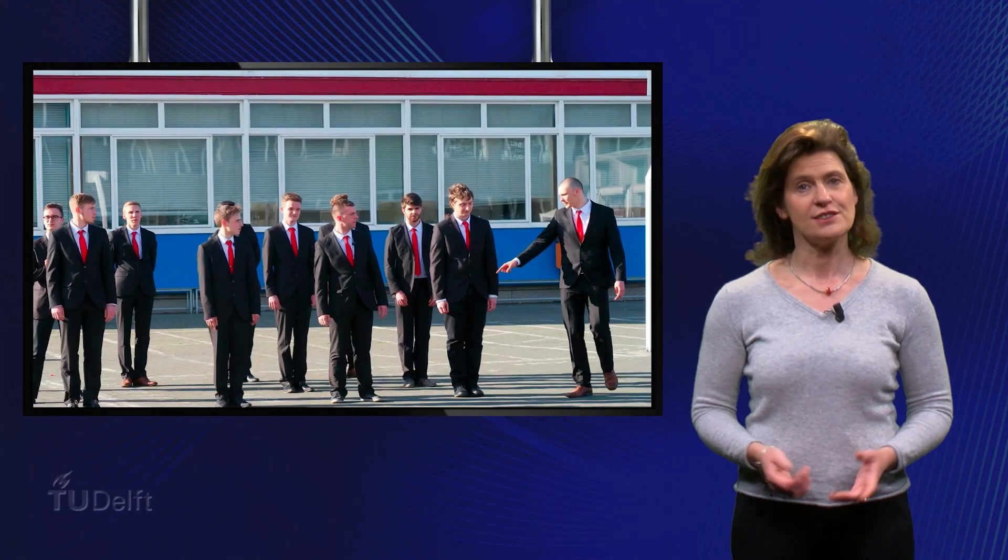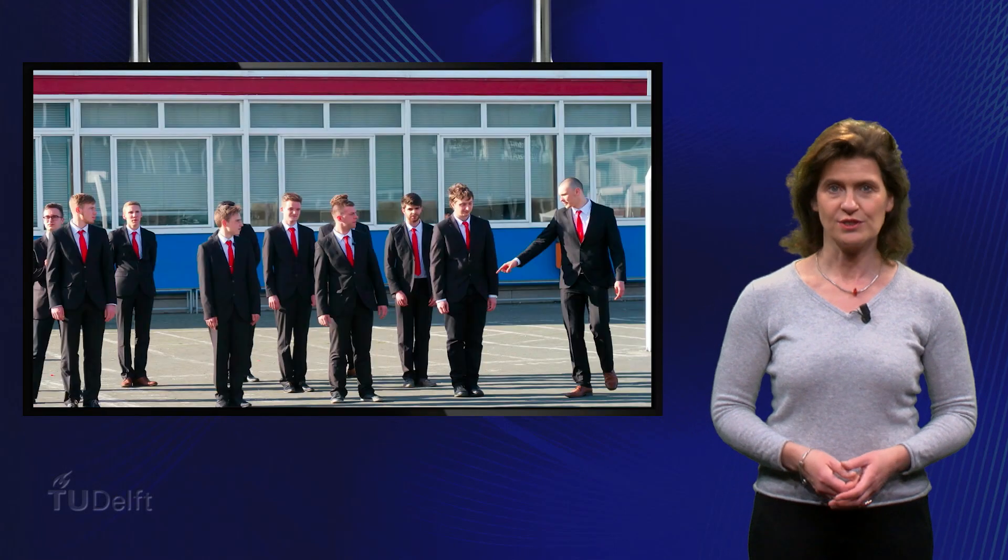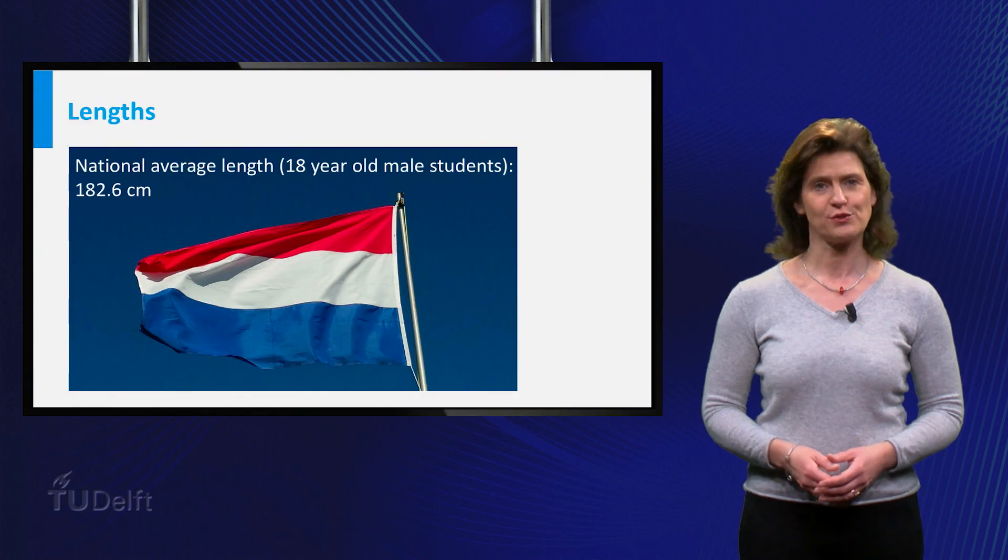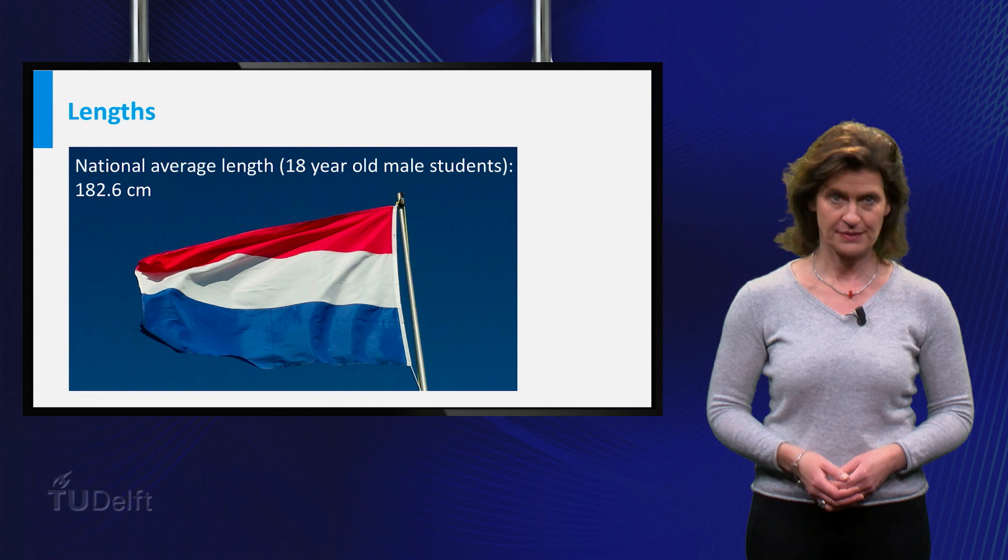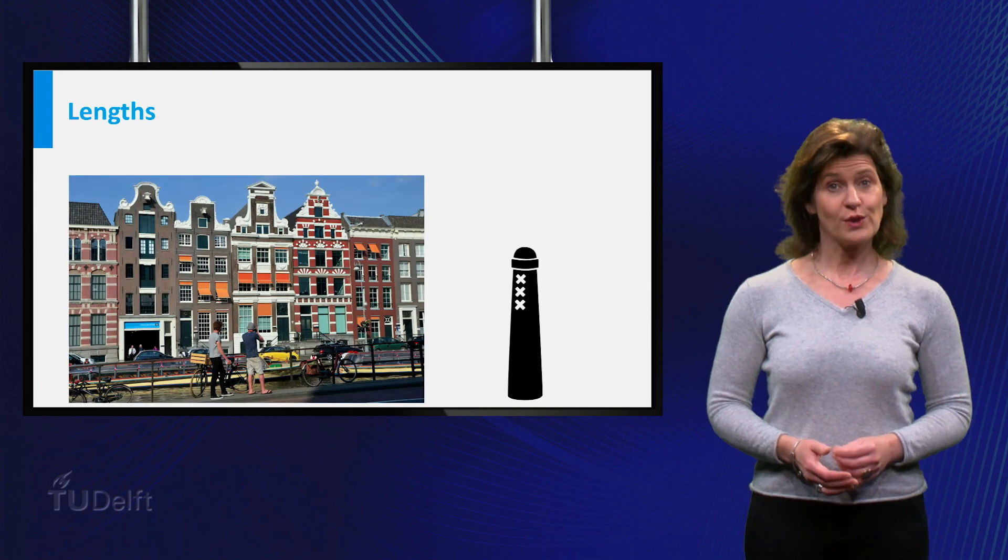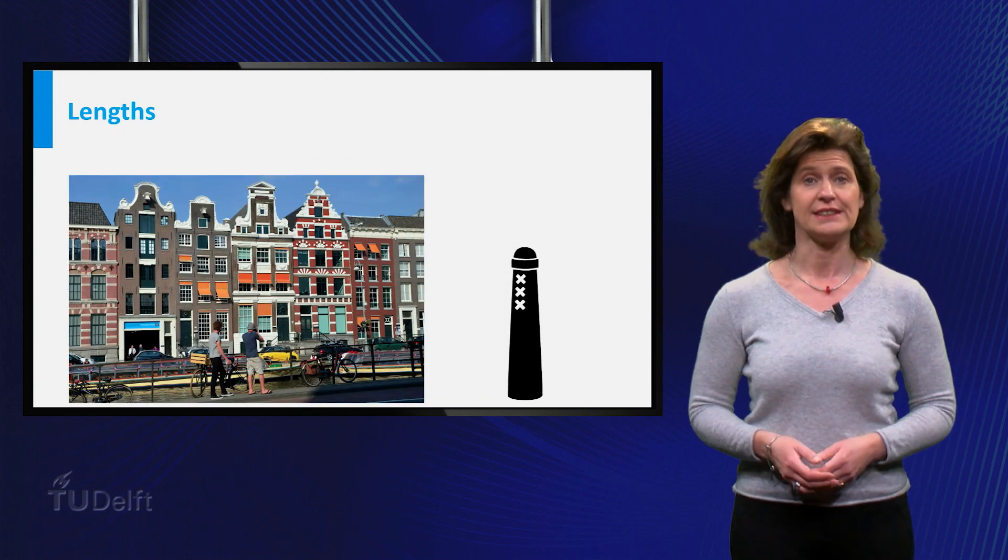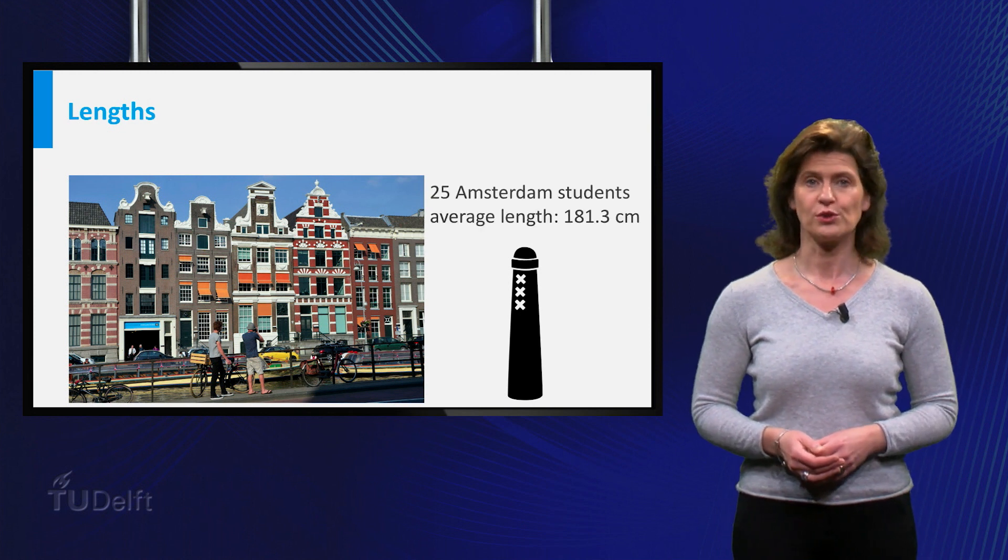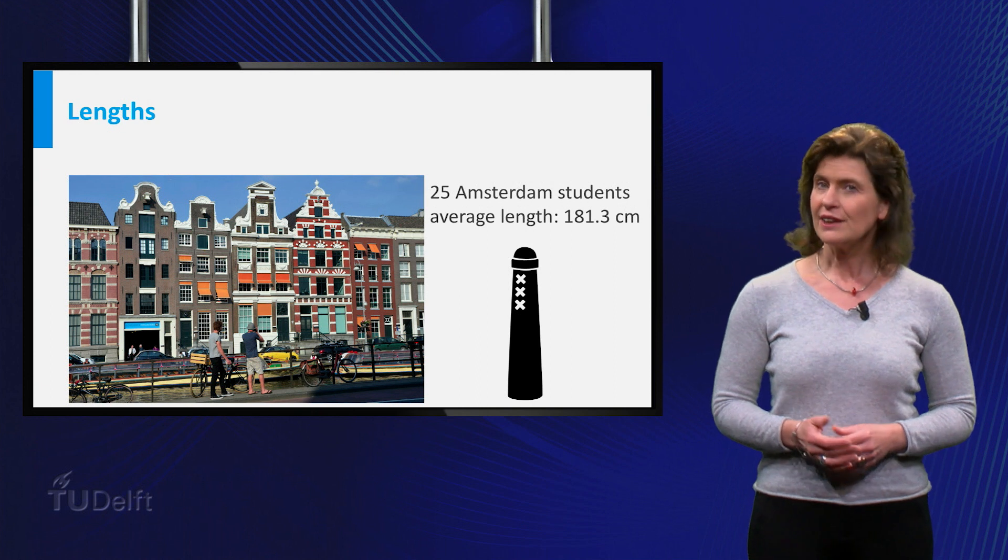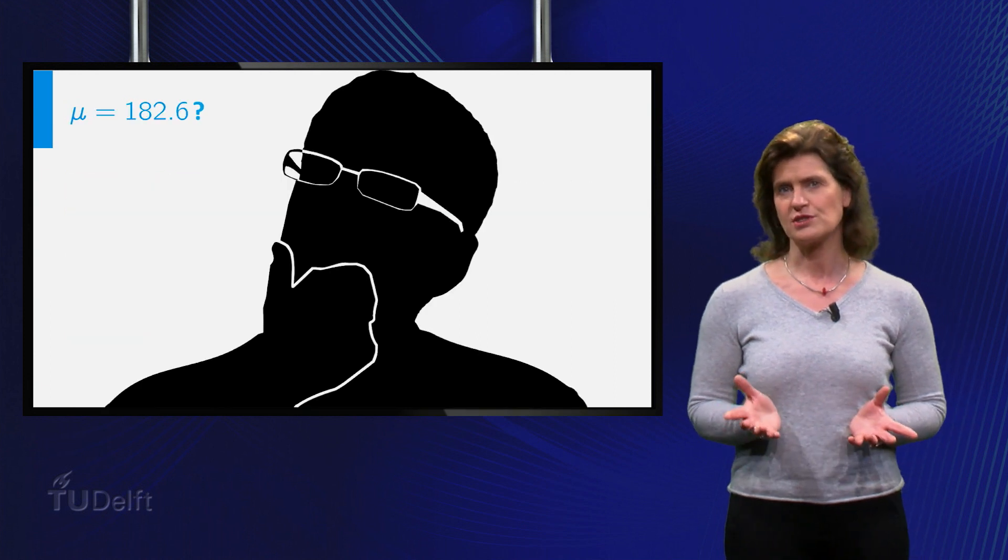Hi! In the Netherlands, 18-year-old male students are known to have an average length of 182.6 cm. In Amsterdam, 25 students aged 18 years are measured. Their average length turns out to be 181.3 cm. Can you conclude that Amsterdam students are on average shorter than their Dutch colleagues?